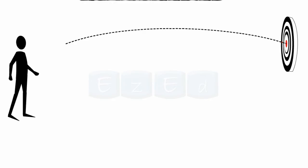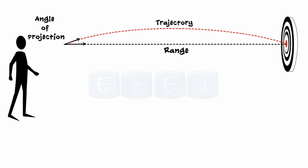The path traced by a projectile is called trajectory, and the angle at which a projectile is thrown into space is called the angle of projection. The minimum distance between the point of projection and the point where the projectile strikes is called the range.